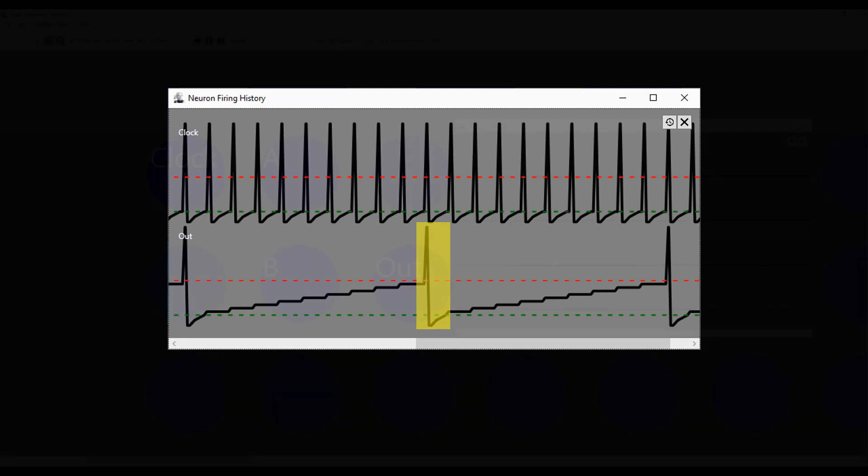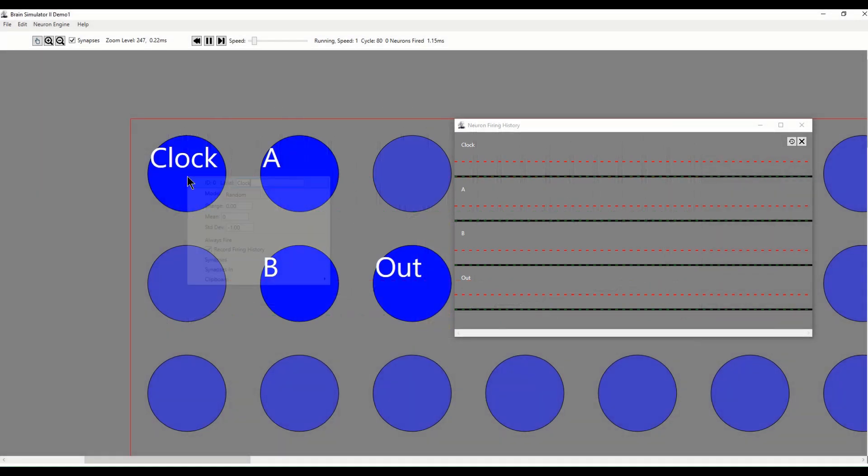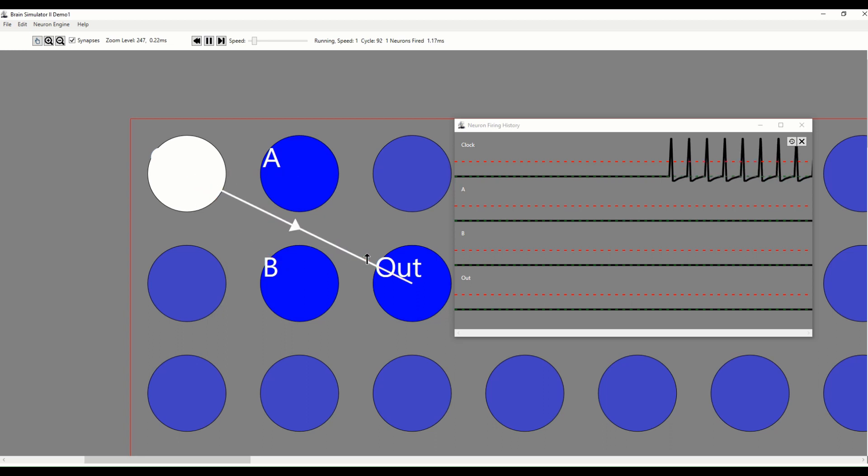In the simulator, here are a few neurons. We'll set the one labeled clock to spike as fast as it can. You can see the firing in the spiking timeline. Now we'll add a synapse from the clock neuron to the neuron labeled out.